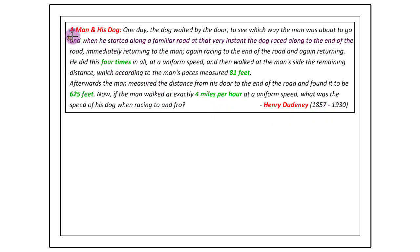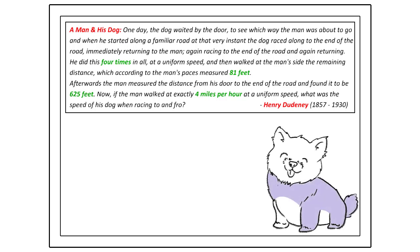The puzzle goes something like this: there is a man and his dog, and one day the dog is waiting by the door just watching which way the man is about to go. When the man starts along a familiar road, the dog immediately knows where he's heading to. So that very instant, the dog races along to the end of the road and immediately returns to the man. Again he races to the end of the road and again returns, and he keeps doing that in all four times with uniform speed. Then he joins the man and walks together with him the remaining distance, which according to the man's pace measures to 81 feet.